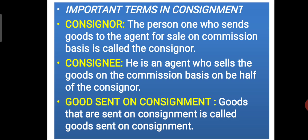The third term is Goods Sent on Consignment. It is very simple — whatever goods we are using in the Consignment business, those goods are called goods on consignment. So the three terms we completed here are: one is Consignor, another is Consignee, and the third one is Goods Sent on Consignment.